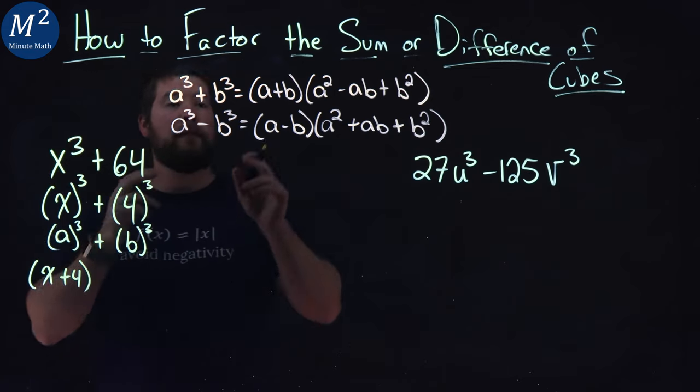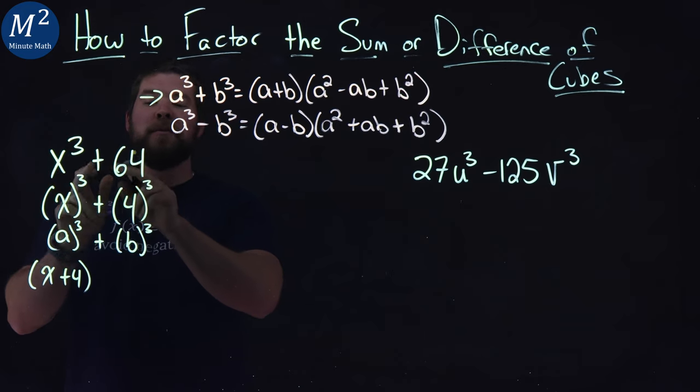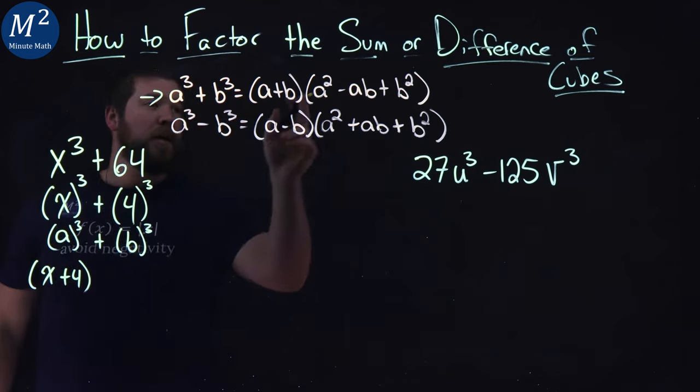First we have a plus b so a value is x plus our b value is 4. And notice we're doing the first formula right here because we have an a cubed plus a b cubed right plus right there.